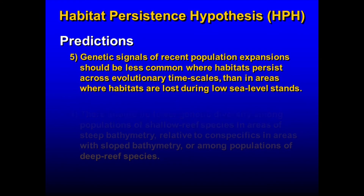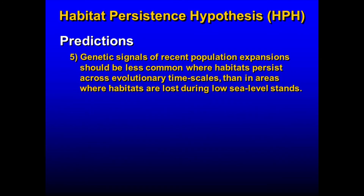The fifth prediction is that genetic signals of recent population expansion should be less common where habitats persist across evolutionary timescales than in areas where habitats are lost from low sea level stands, for largely the same reasons.